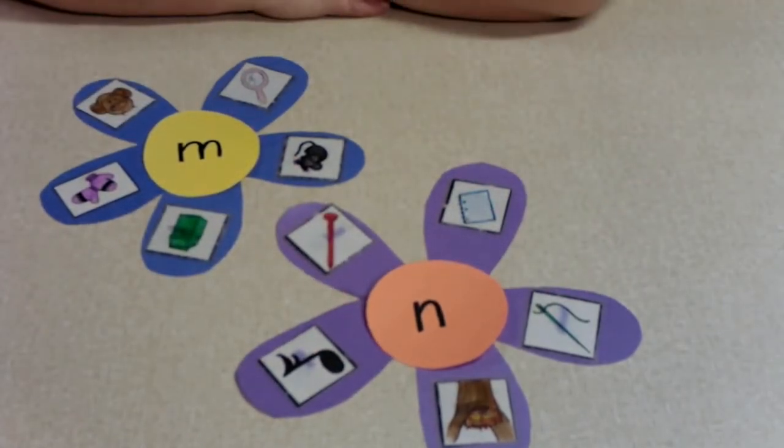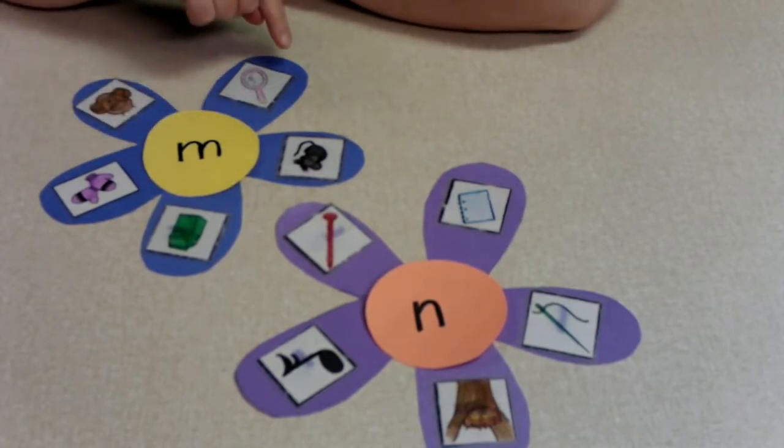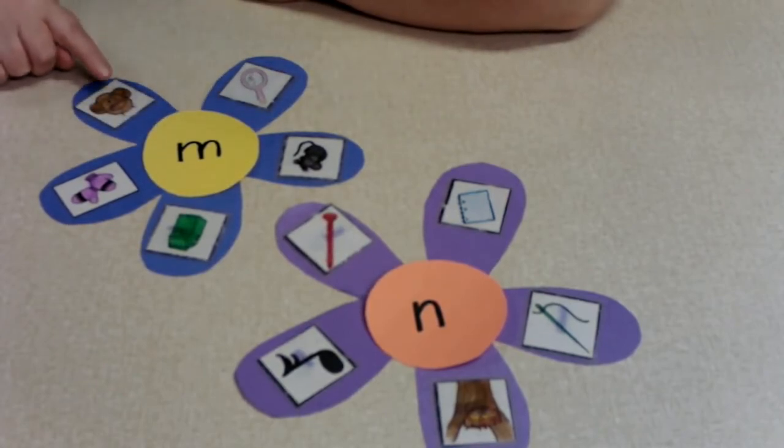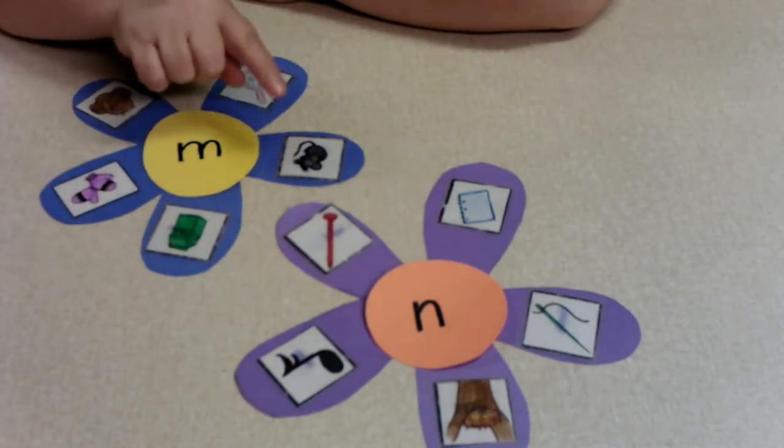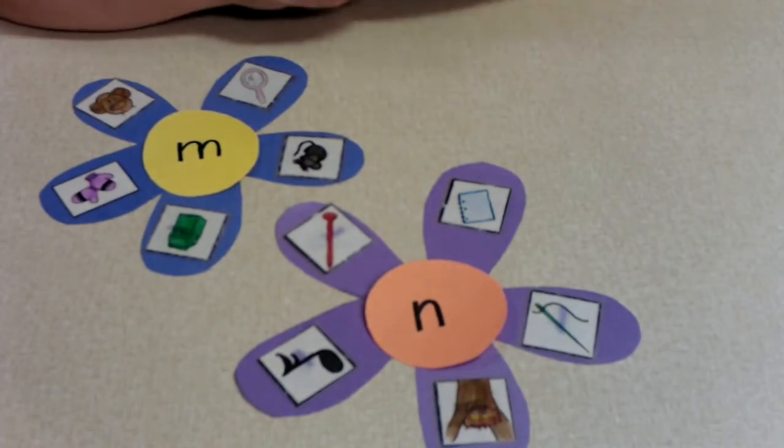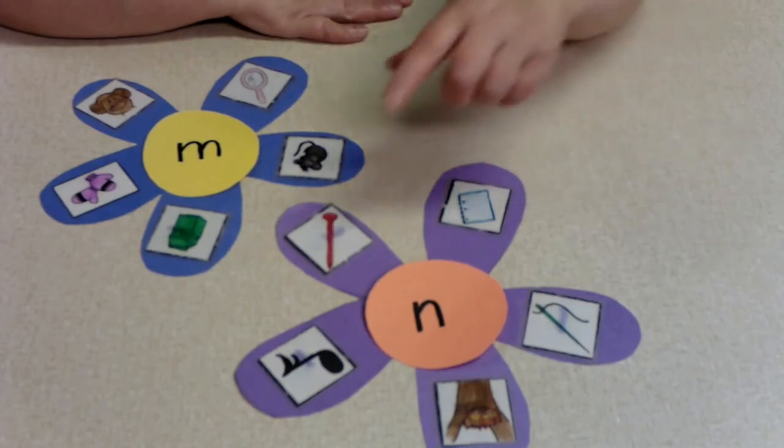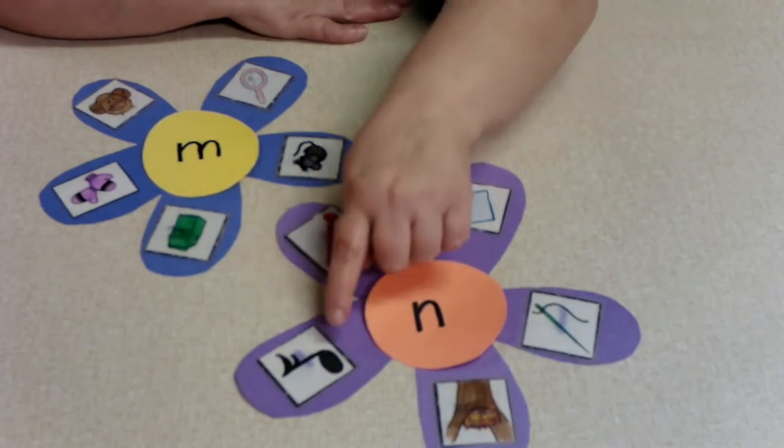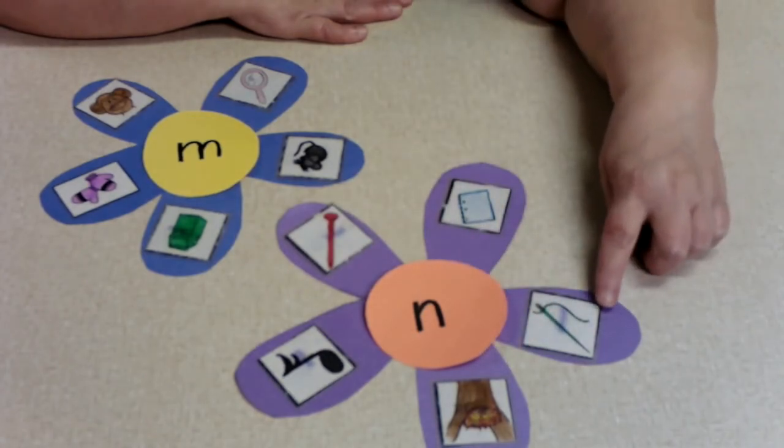So let's see. Did I get them right? We've got M for mirror, monkey, mittens, milk, and mouse. We've got the N sound, which says N for notebook, nail, note, nest, and needle.